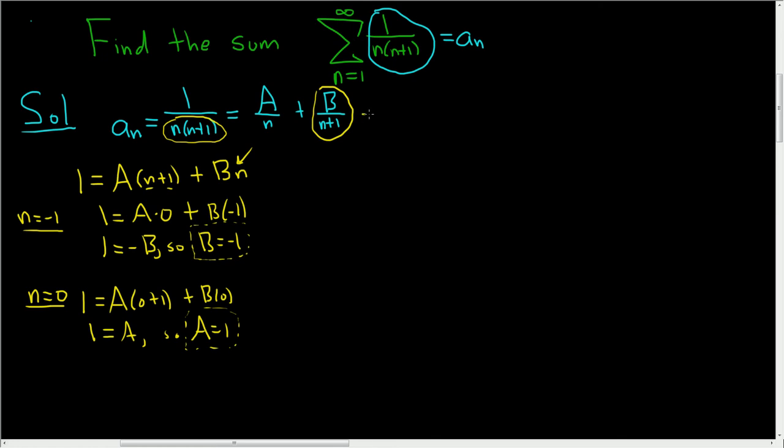So now we can go back up here and rewrite this. This will be 1 over n minus 1 over n plus 1. All right, now that we have a sub n, let me write it again. So a sub n is 1 over n minus 1 over n plus 1.